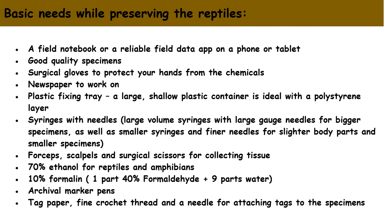What are the basic needs while preserving reptiles? First, a field notebook to record which organism it belongs to. Second, good quality specimen. Third, surgical gloves to protect the hands from chemicals. Fourth, newspapers. Fifth, a plastic fixing tray. Sixth, a syringe with needles — a larger syringe for larger volume specimens and a smaller syringe for smaller specimens.